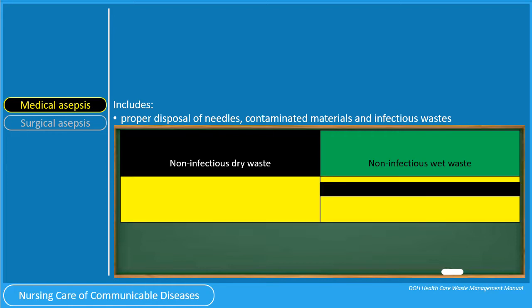Infectious and pathological waste are placed in waste bins color-coded yellow, while chemical waste including heavy metals are placed in waste bins color-coded yellow with black bands. A previous licensure examination asked in which waste bin a used tissue should be disposed — the answer is the yellow bin for infectious and pathological waste.